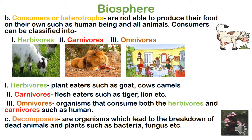Next are decomposers. Decomposers are organisms which break down dead animals and plants — such as bacteria and fungus. In the picture you can see fungus growing on a dead plant. Decomposers are organisms that help in the decomposition of organic material like dead animals and plants.